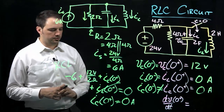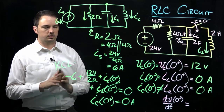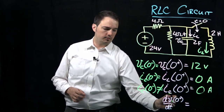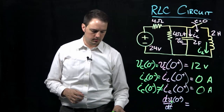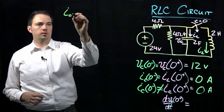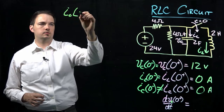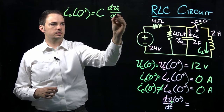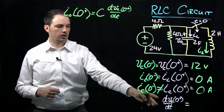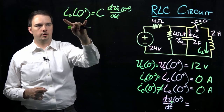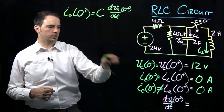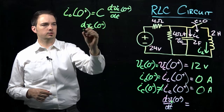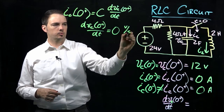Now for the derivative of the voltage at time zero plus: we apply the capacitor relationship IC(0+) = C · dVc/dt evaluated at zero plus. Since we already found IC(0+) to be zero amps, the derivative of the voltage at time zero plus also equals zero volts per second.